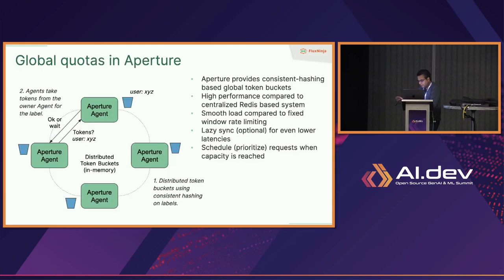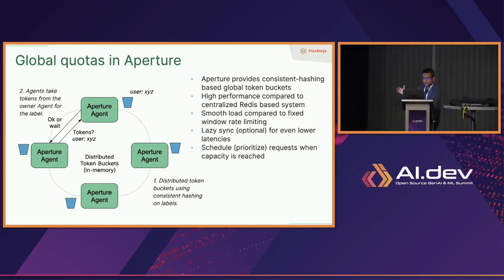One of the cool things about Aperture is it's a distributed cache — the token buckets are sharded and distributed in the cluster, and all agents participate in a common pool. Each time you have a token bucket lookup on an API key — in the case of OpenAI, you track rate limits by API key — it finds the owner of that API key and runs the token bucket algorithm. Think of it as a distributed token bucket available inside your cluster.